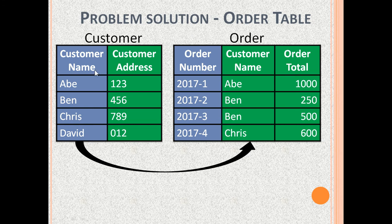The first is the CustomerTable with columns CustomerName and CustomerAddress. CustomerName is the only candidate key and CustomerAddress depends on it, so this table is in 2NF.